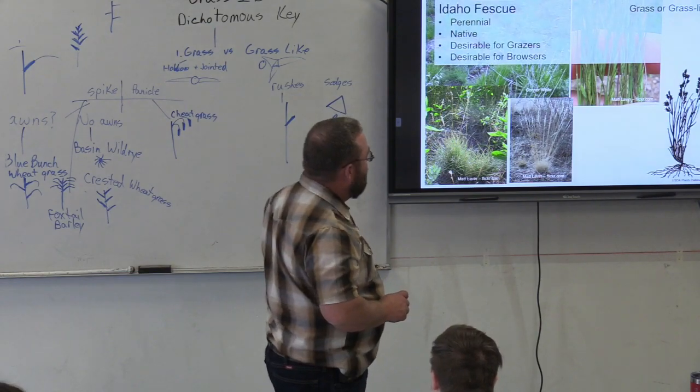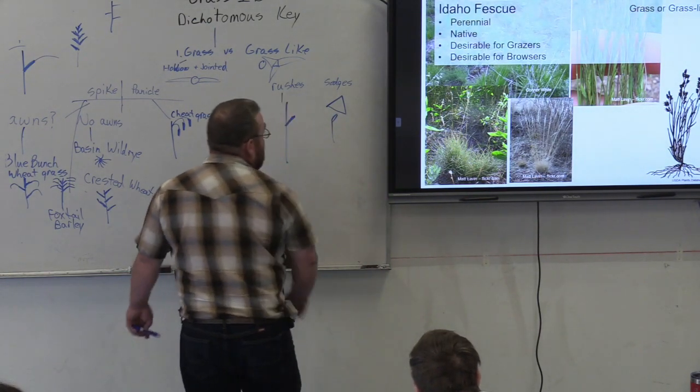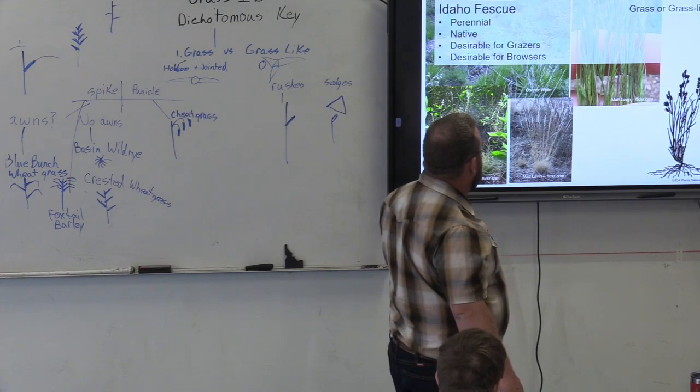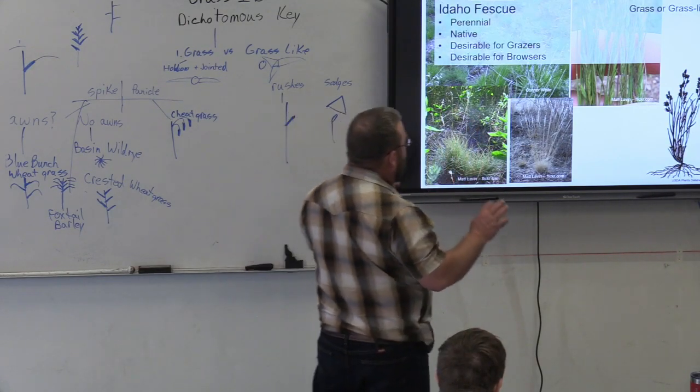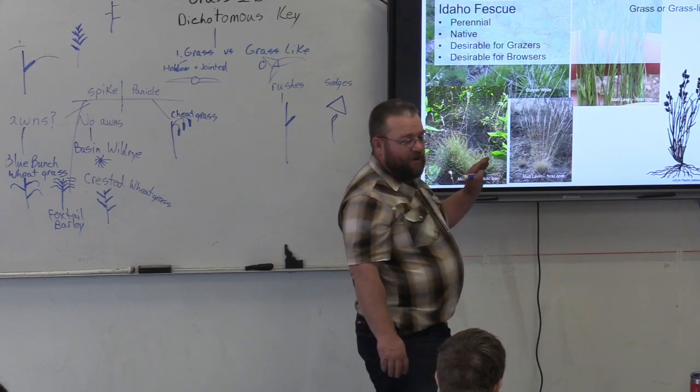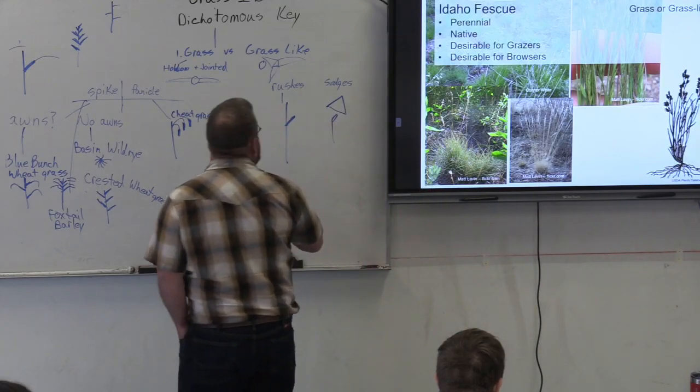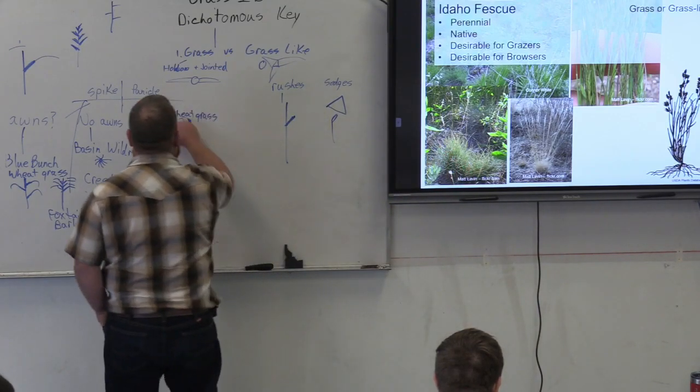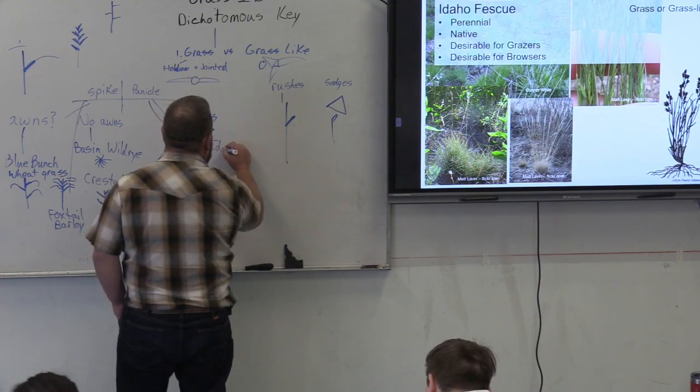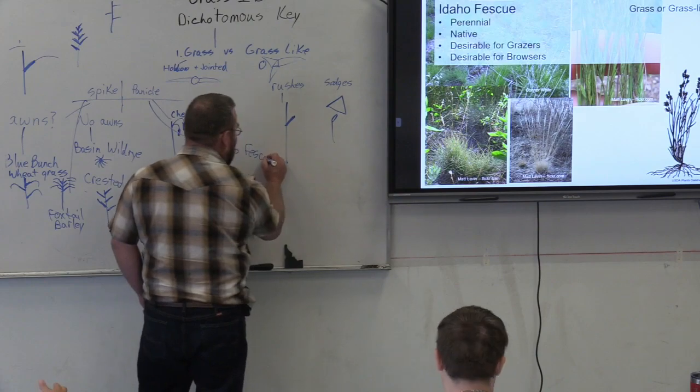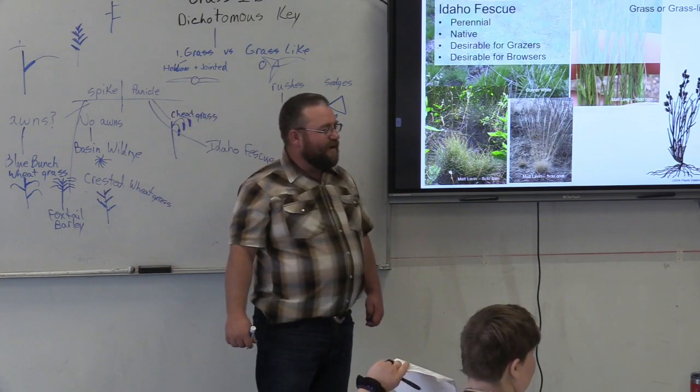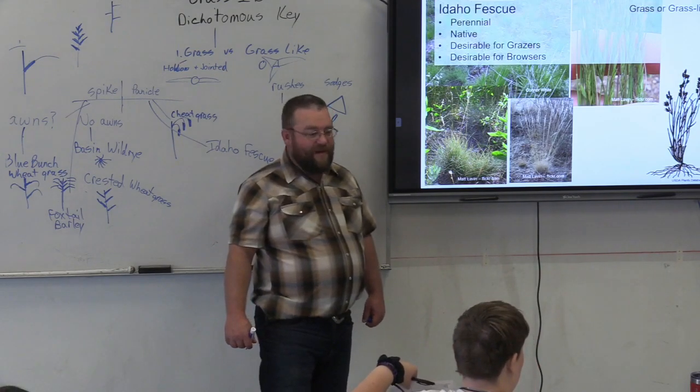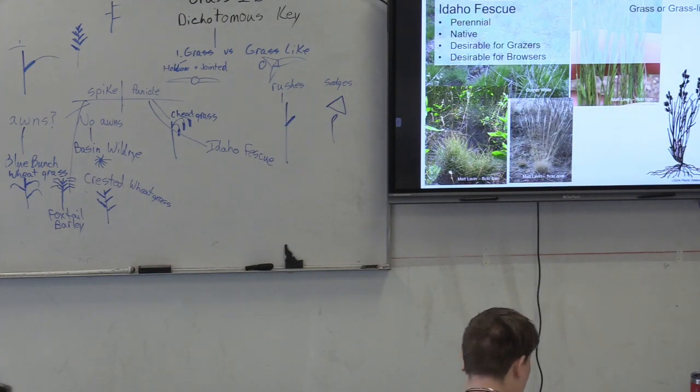What's next? Idaho fescue. Good old Idaho. A couple things about this plant that needs to be noted: it's most confused with sandberg bluegrass. So first of all let's look at it. It's got very small panicles, there's a panicle there, so we're going to call it a panicle. Idaho fescue.